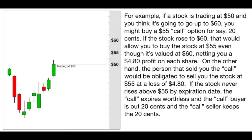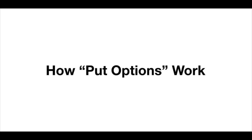The other party — the seller of the call — has the obligation to sell the stock to the buyer at the strike price if the buyer exercises the option. For example, if a stock is trading at $50 and you think it's going to go up to $60, you might buy a $55 call option for 20 cents. If the stock rose to $60, that would allow you to buy it at $55, netting you a $4.80 profit per share. If the stock never rises above $55 by expiration, the call expires worthless — the buyer is out 20 cents and the seller keeps the 20 cents.